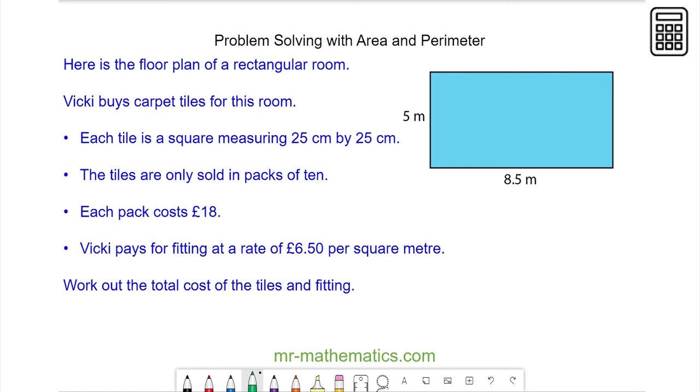Here we have the floor plan of a rectangular room which measures 5 meters by 8.5 meters, and we're going to cover this in tiles which measure 25 by 25 centimeters.